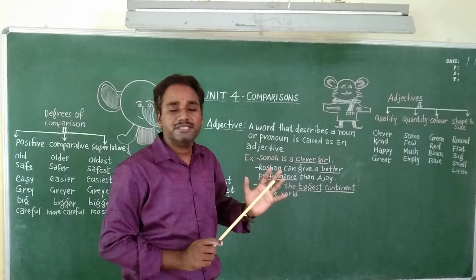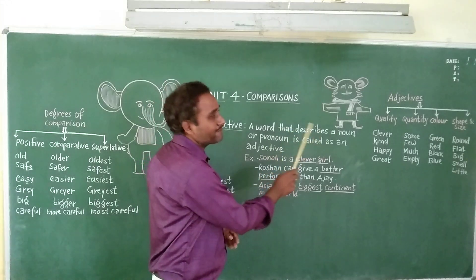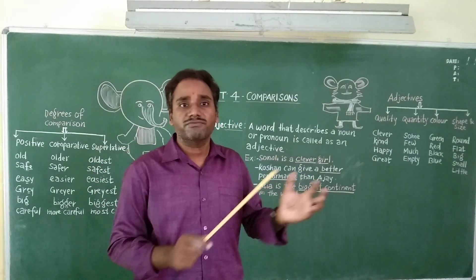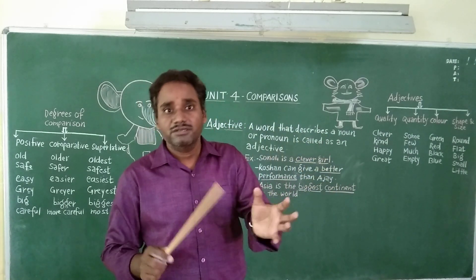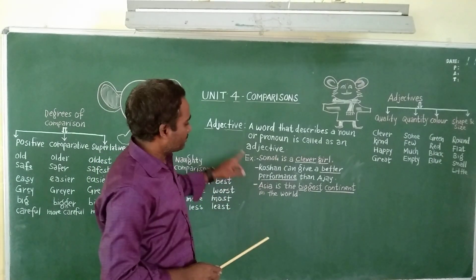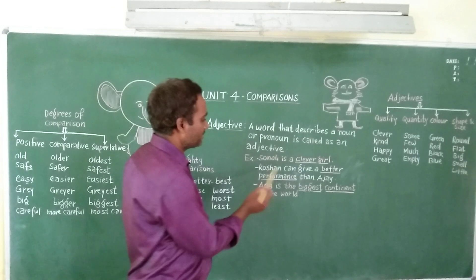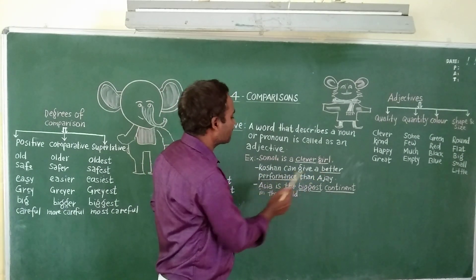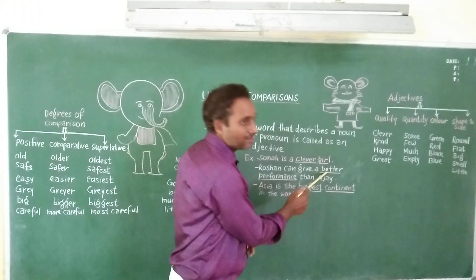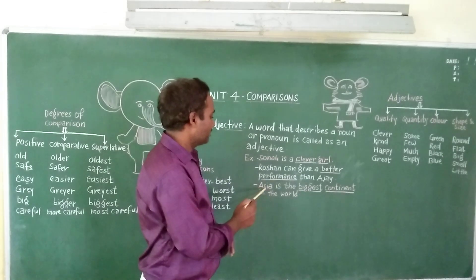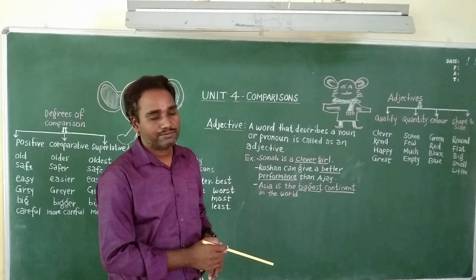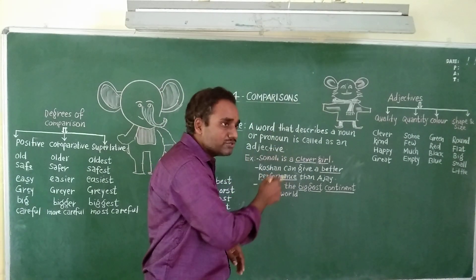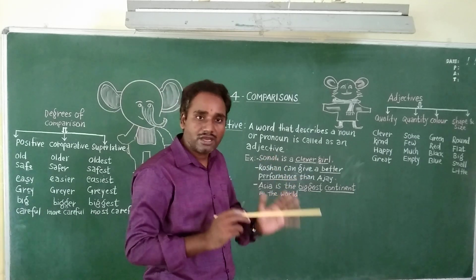Before that, let us see what is an adjective. A word that describes the noun or pronoun is called an adjective. We use adjectives to compare one person with another, and one thing with another. For example: Sonali is a clever girl — here, clever is an adjective describing Sonali. Rohan can give a better performance than Ravi — here, better is an adjective and performance is a noun. Asia is the biggest continent in the world — biggest is an adjective and continent is a noun.